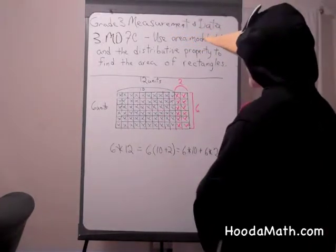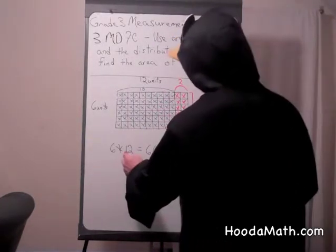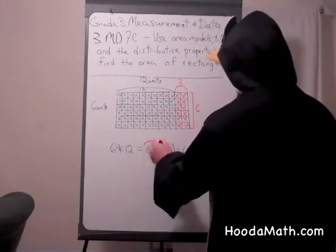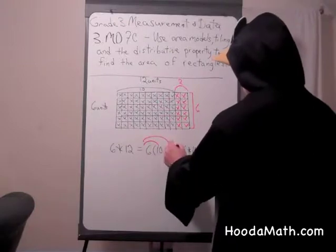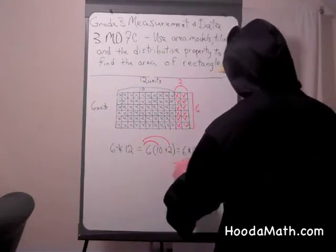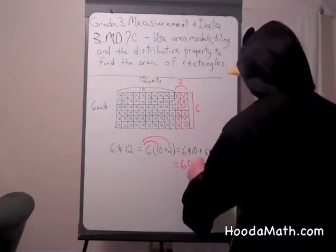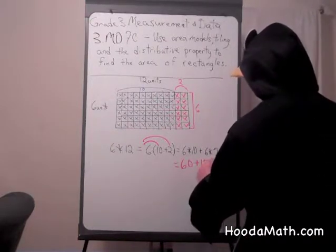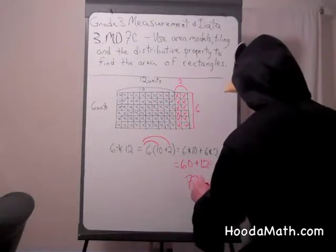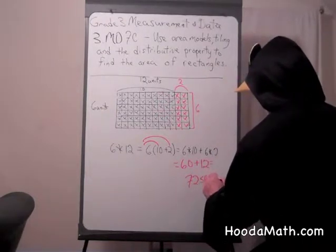Now using the distributive property I can divide 12 into 10 plus 2 and distribute 6 times 10 and 6 times 2 and add them up. 6 times 10 is 60 and 6 times 2 is 12. We add them together we have 72 unit squares or 72 square units.